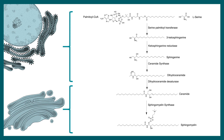Ceramide synthesis takes place in the endoplasmic reticulum. Beyond ceramide, further modifications — such as adding sugar moieties or the addition of a phosphatidylcholine group — take place in the Golgi apparatus.